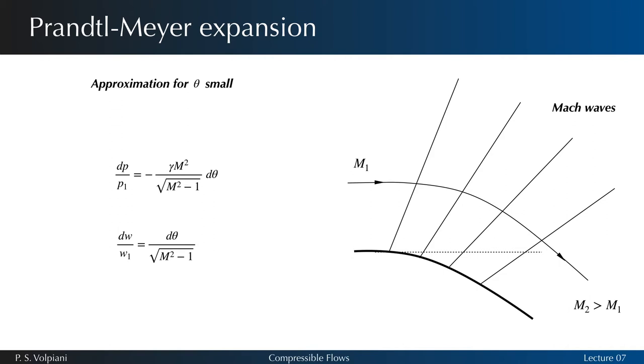Our objective now is to relate the changes in Mach number to the turning angle in a Prandtl-Meier flow. Across each Mach wave, there is an infinitesimal variation of flow quantities. Very small increase of the velocity and very small decrease of the pressure, for example.